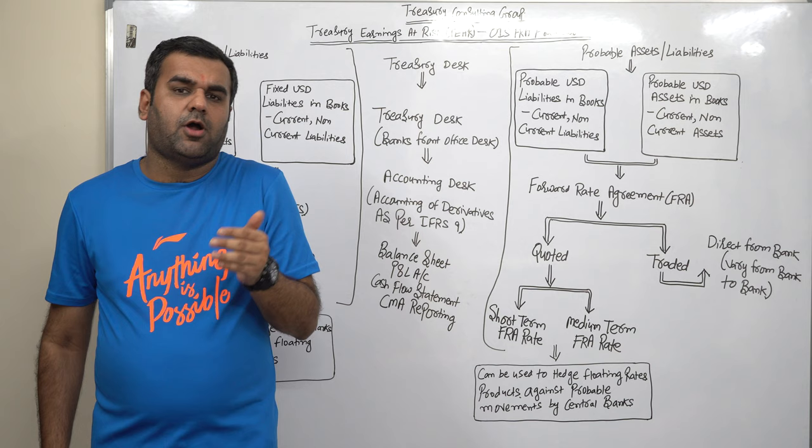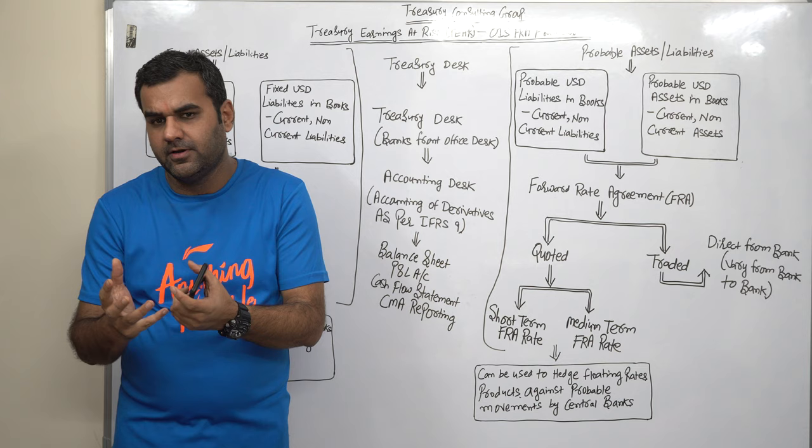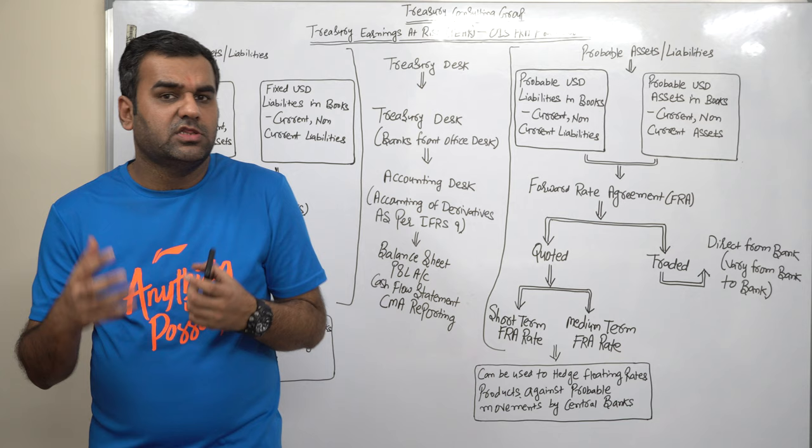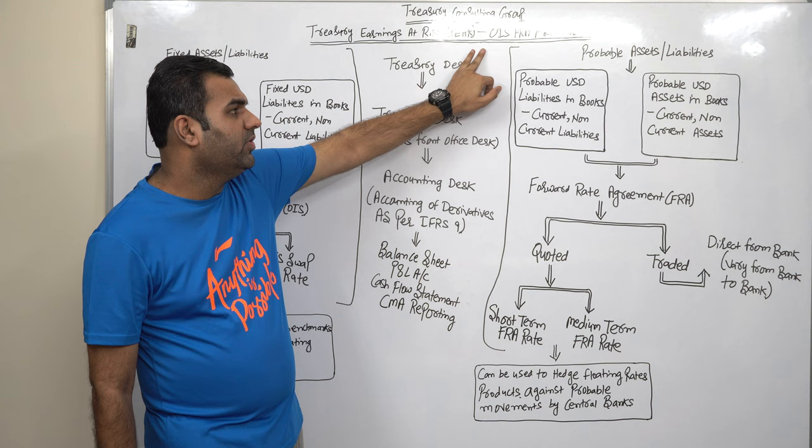You know, the biggest problem in the human mind is that human mind focus too much about what is being presented. It never thought what is not being presented and that is where we are losing. So this time our framework would let you know that how we can have OIS which is Overnight Index Swap and FRA framework in your organization.